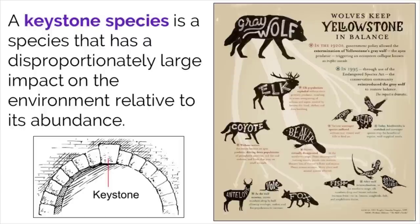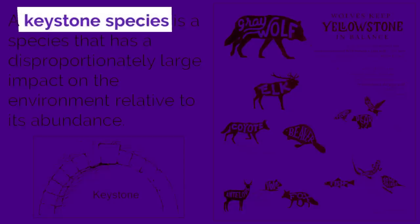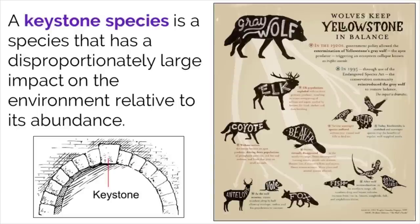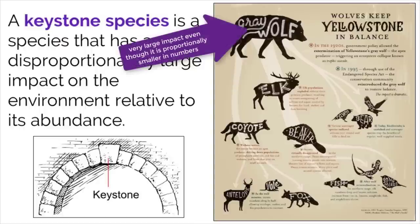The last interaction we need to discuss is that of a keystone species. A keystone species is a species that has a disproportionately large impact on the environment relative to its population size. In other words, this species is so important to the ecosystem that if something were to happen to it, the ecosystem could fall apart, much like if you took the keystone brick out of this archway — all of the other pieces would go tumbling down.